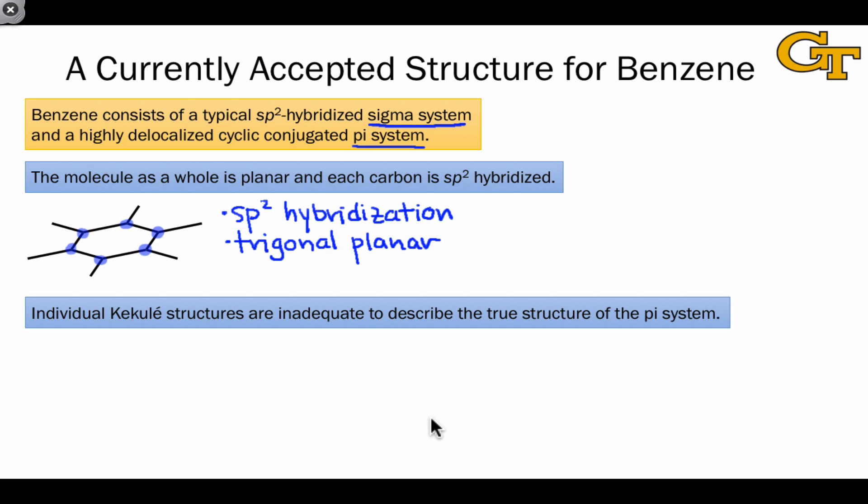Where things get interesting is in the structure of the pi system. There are two possible arrangements of the pi bonds in benzene, and neither is really adequate to describe the true nature of the pi system. These are resonant structures, and we can show their interconversion through cyclic electron flow like this.